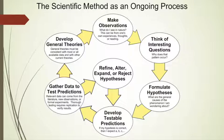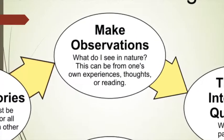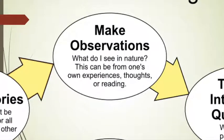The scientific method is a procedure to gather observations, to gather data, and to make conclusions based on this data. The scientific method begins with making observations — what do I see? What do I experience that I cannot explain? This information can be from one's own experiences, thoughts, or readings. It doesn't matter where they come from as long as we find something to investigate.